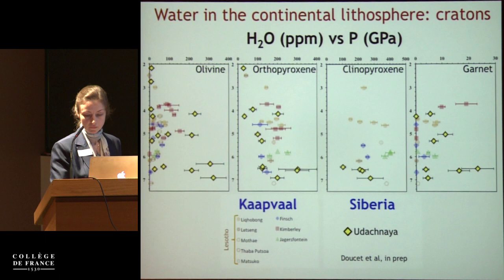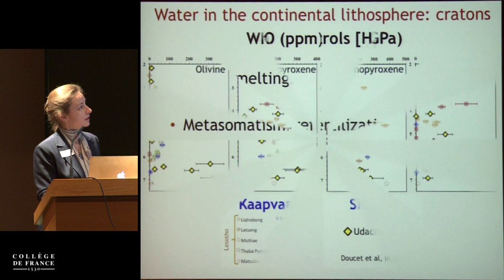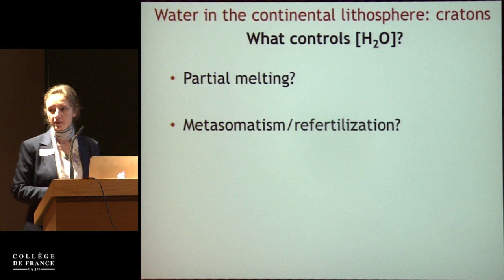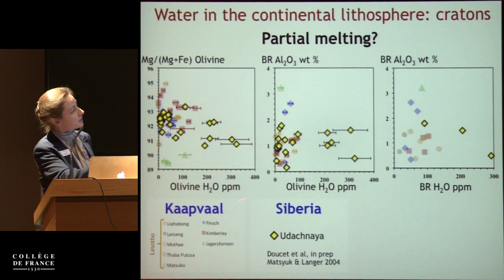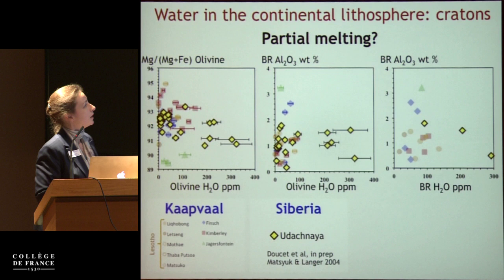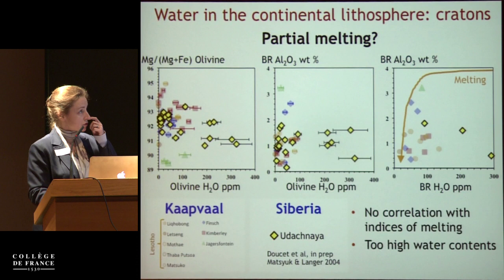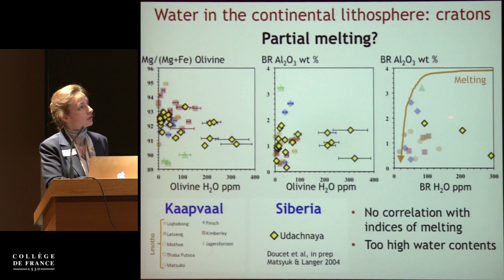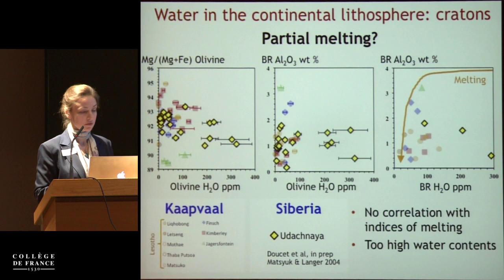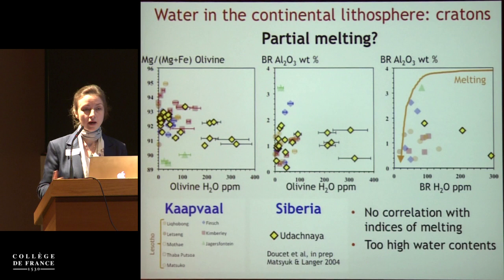What controls these wide ranges of water content? Just as we did for Hawaii, we ask: is it partial melting or metasomatism? Looking at olivine and bulk rock water content versus various indices of melting, there is no correlation. Furthermore, just as in Hawaii, there is too much water in these peridotites to be explained by melting models alone — most xenoliths are too water-rich relative to the modeled melting curve.